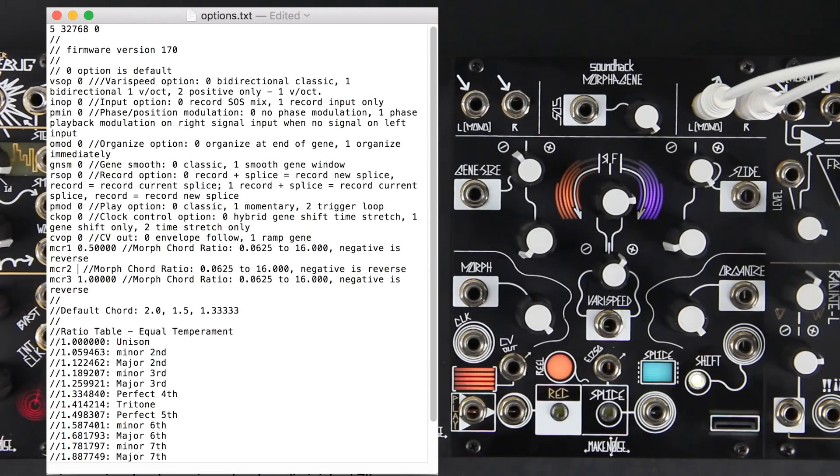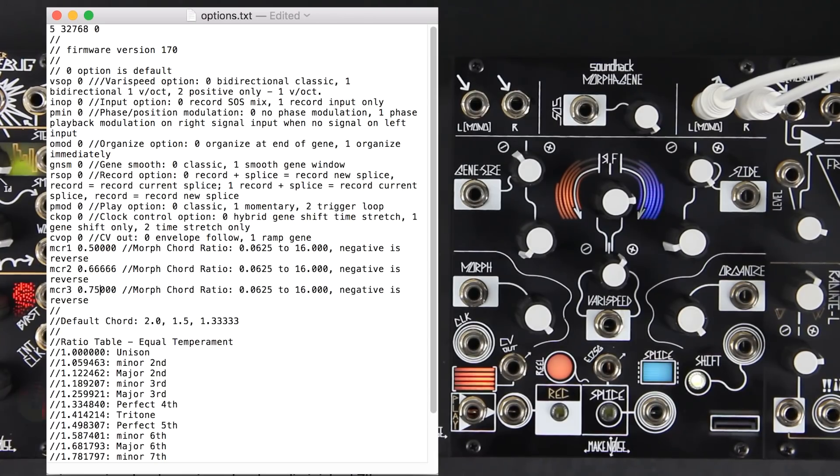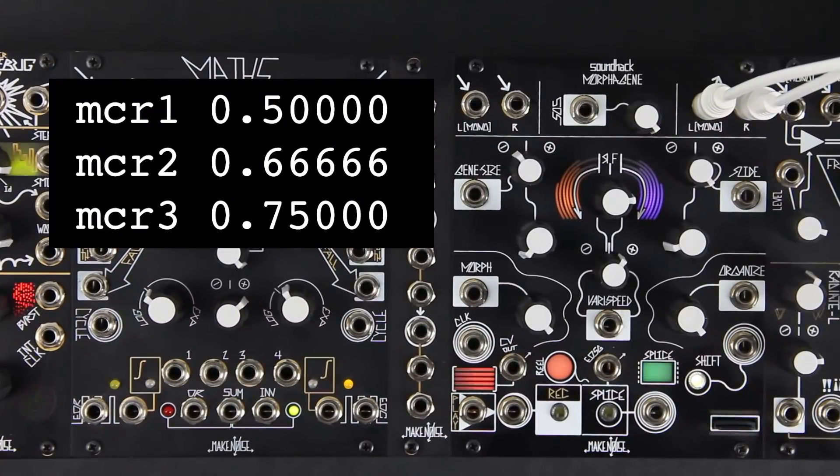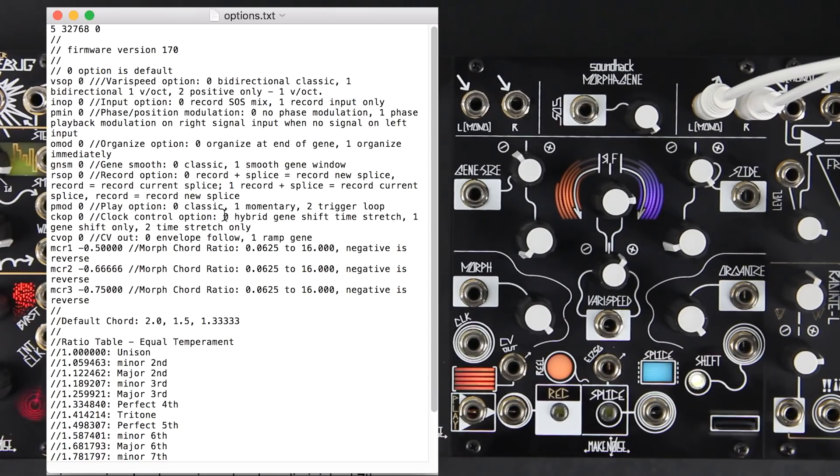Values below one slow it down. For example, 0.5 is an octave down. A negative value causes the selected gene to play in reverse.